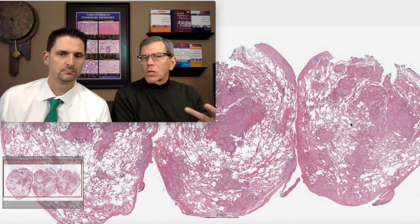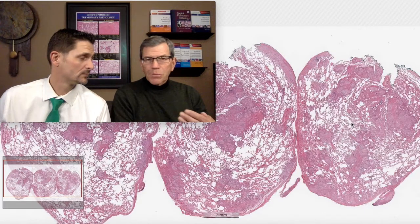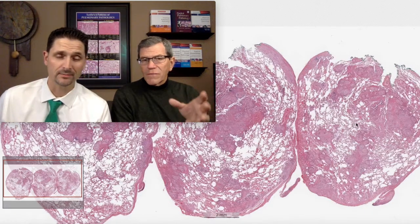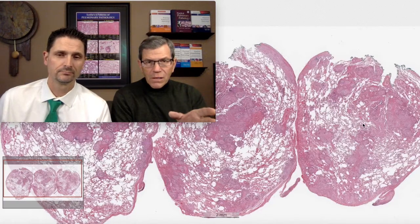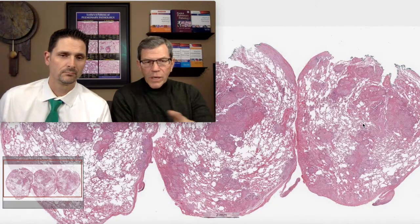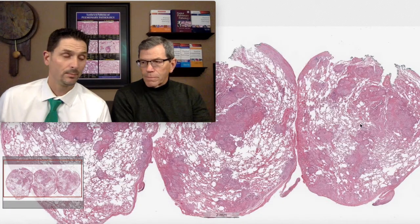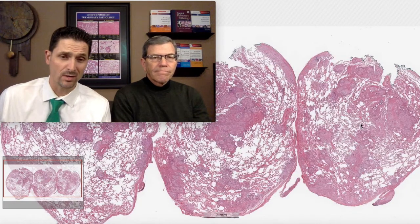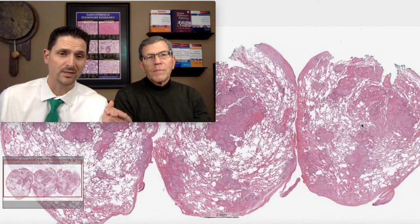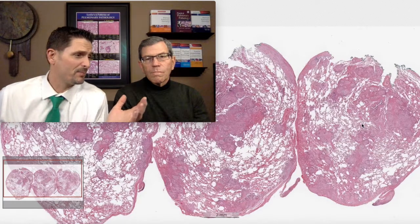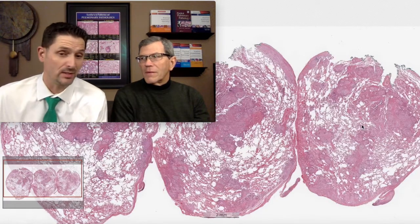The radiologists use the term 'perilymphatic' to describe the nodule distribution. When nodules involve the airways, the pleura, the interlobular septa, and the fissures, that's a perilymphatic pattern — because that's where the lymphatics are. You've got lymphatics in your bronchovascular bundle, lymphatics in your pleura, and lymphatics in your interlobular septa.